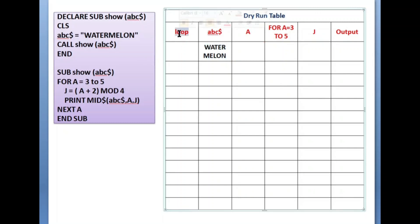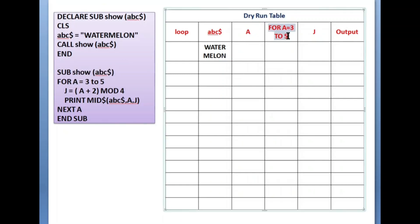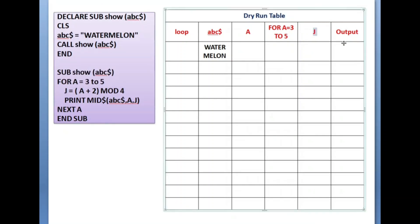I'll set up the dry run table. I'll track: the loop iteration count, the variable 'a', whether the loop condition is true or false, the variable 'j', and finally the output — whatever the program prints will be written in the output column.